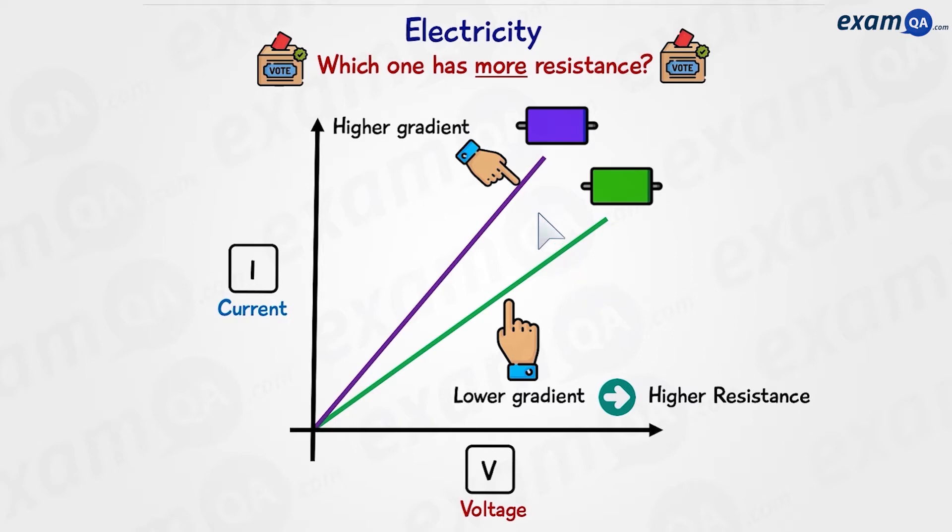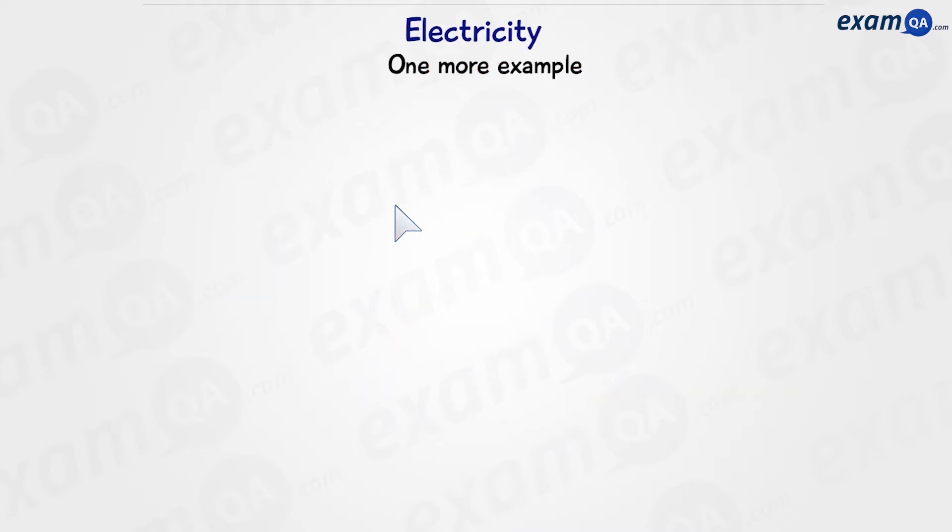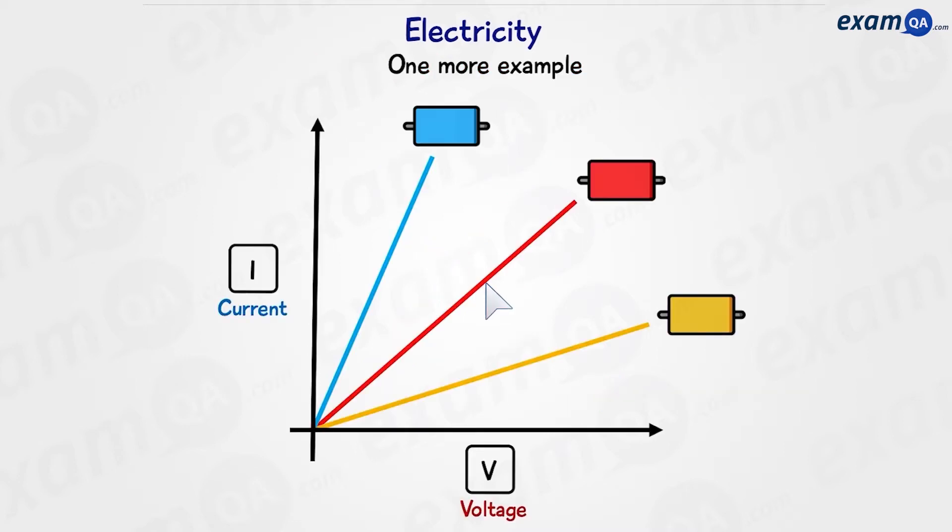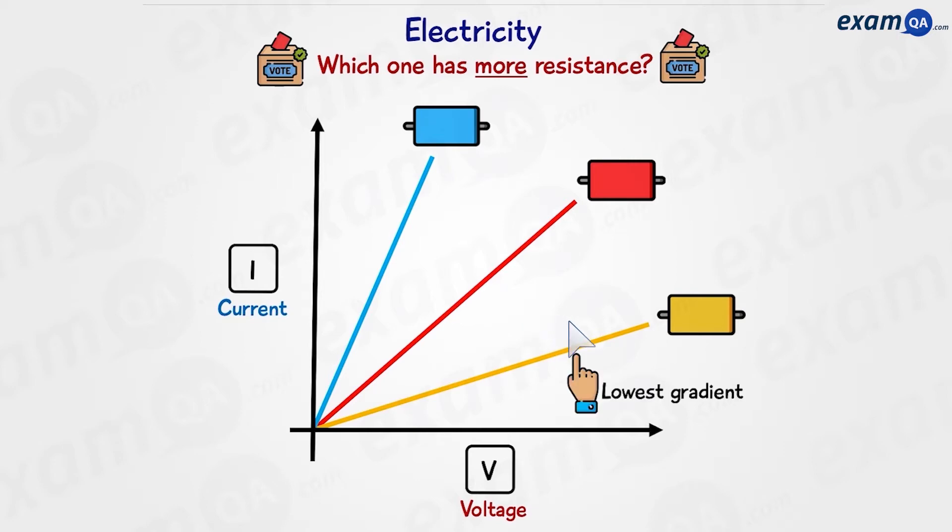Therefore the purple one, with a higher gradient, or a steeper line, has a lower resistance. Let's do one more example. Here we have three components. Which one has the most resistance? It's going to be this one, because it has the lowest gradient.